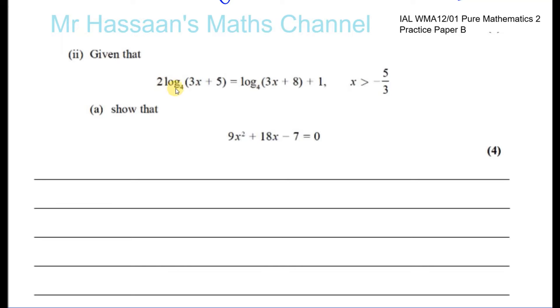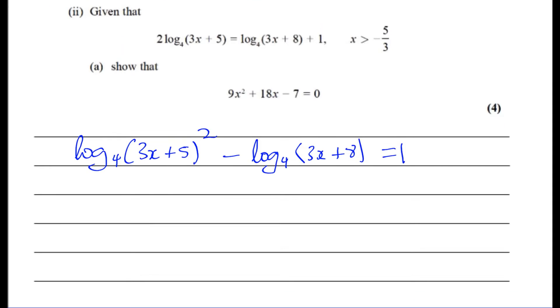So I'm going to use the power law first. I'll say log to the base 4 of 3x plus 5 squared. That's using the power law. And at the same time, I'll take this to this side. So I'll subtract it from both sides. It's log to the base 4 of 3x plus 8, and that equals 1. I'll leave the 1 on that side. And now I can combine these using the subtraction law. So it's going to be a division, because they're both of the same base.